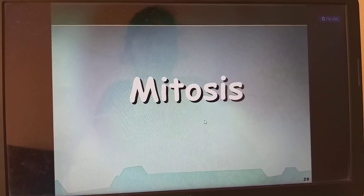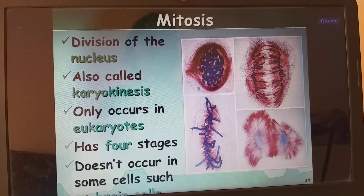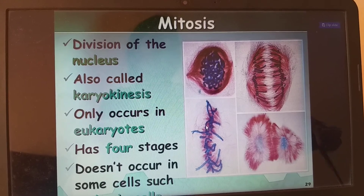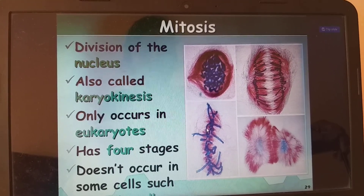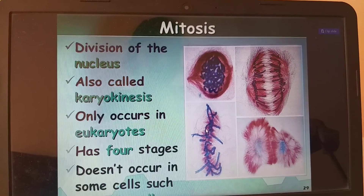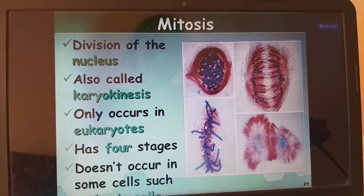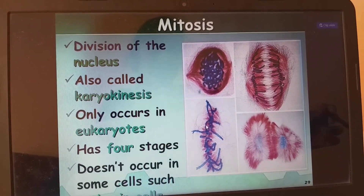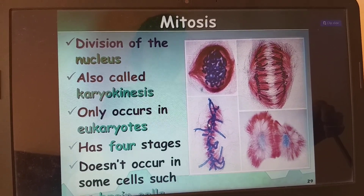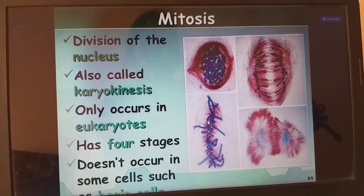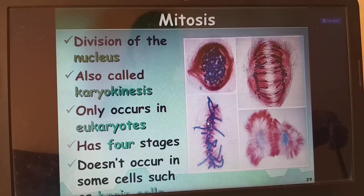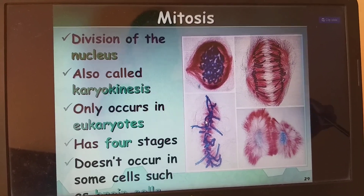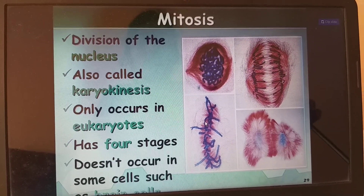Mitosis is the division of the nucleus, also called karyokinesis. It only occurs in eukaryotes, has four stages, and doesn't occur in some cells.